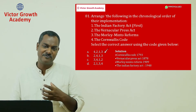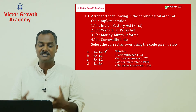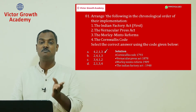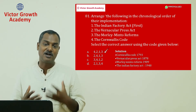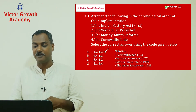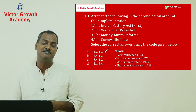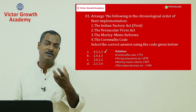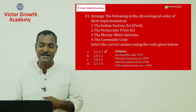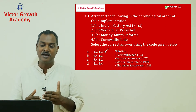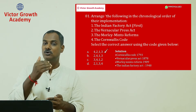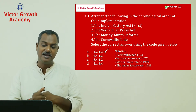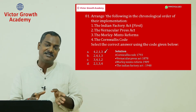Even if you don't know the exact order, you can work it out. Vernacular Press Act (1878) must come before Morley-Minto Reforms (1909), so option 2 must come before option 3. You can eliminate option C because in C, option 3 comes before option 2. Cornwallis Code is around 1793 — Cornwallis is the father of Indian Civil Service. So the order is: Cornwallis Code, Vernacular Press Act, Morley-Minto Reforms.